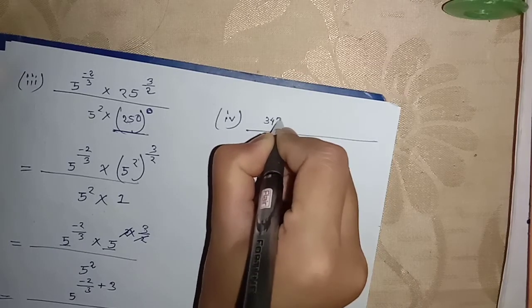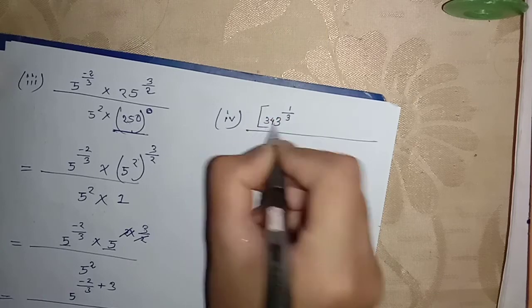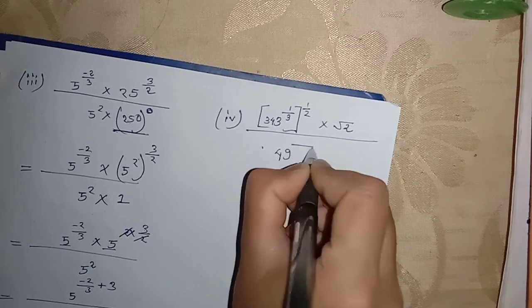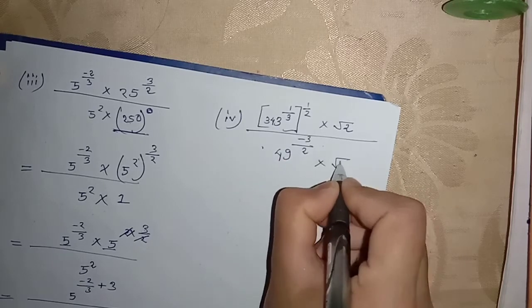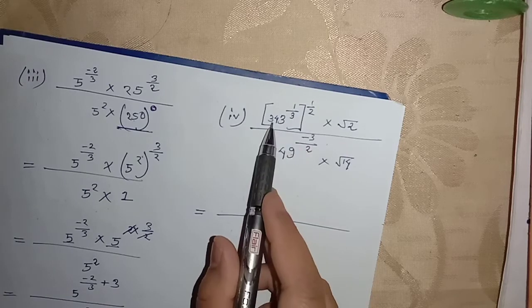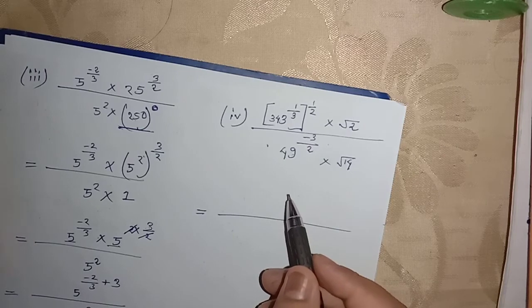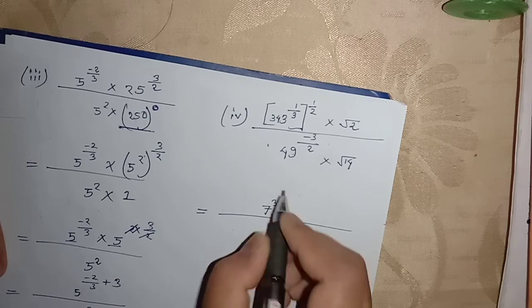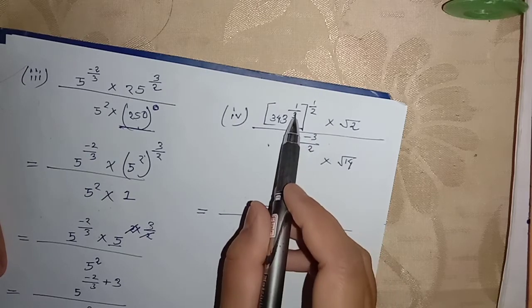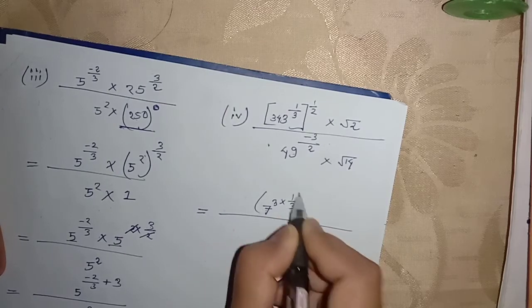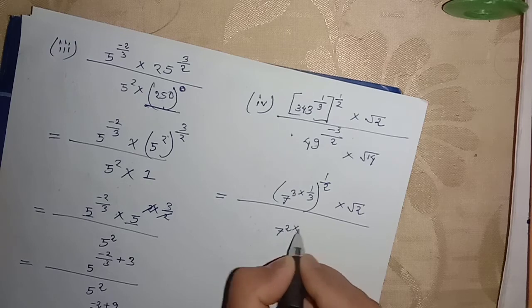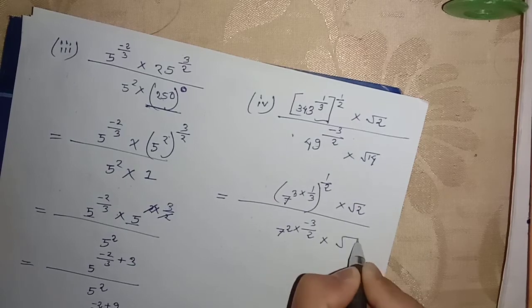Question number 4: 343 to the power 1 by 3, root 2 into 49 to the power minus 3 upon 2, upon root 14. 343 is 7 cube, so 7 to the power 1 by 3. This position is 1 by 2.